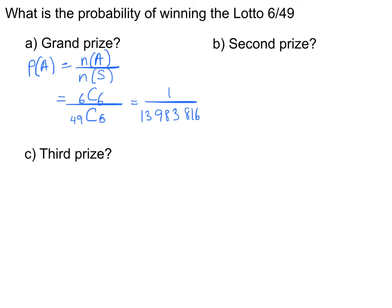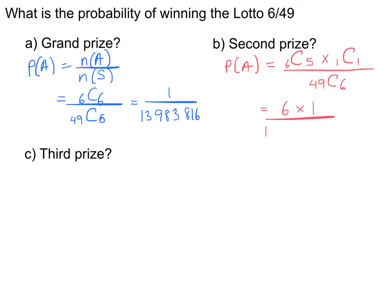Let's look at the second prize — maybe that's more likely to happen. You have to get five out of the six drawn numbers plus the bonus. So the probability is: out of the six drawn winners you choose five, that's 6 choose 5; out of the one bonus ball you get it, that's 1 choose 1; divided by the total outcomes, 49 choose 6. 6 choose 5 is 6, 1 choose 1 is 1, and the denominator is 13,983,816.